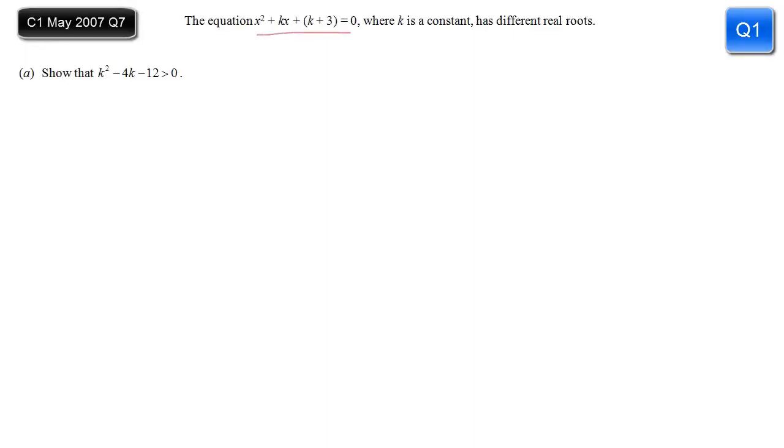In this question we are given a quadratic where the coefficients include this constant k, and we're told that it has different real roots. So straight away we can think the discriminant b² - 4ac has got to be positive so that we can square root it and plus or minus it. So b² - 4ac is greater than 0. It's asking me to show an inequality, so this inequality here is where I'm going to start.